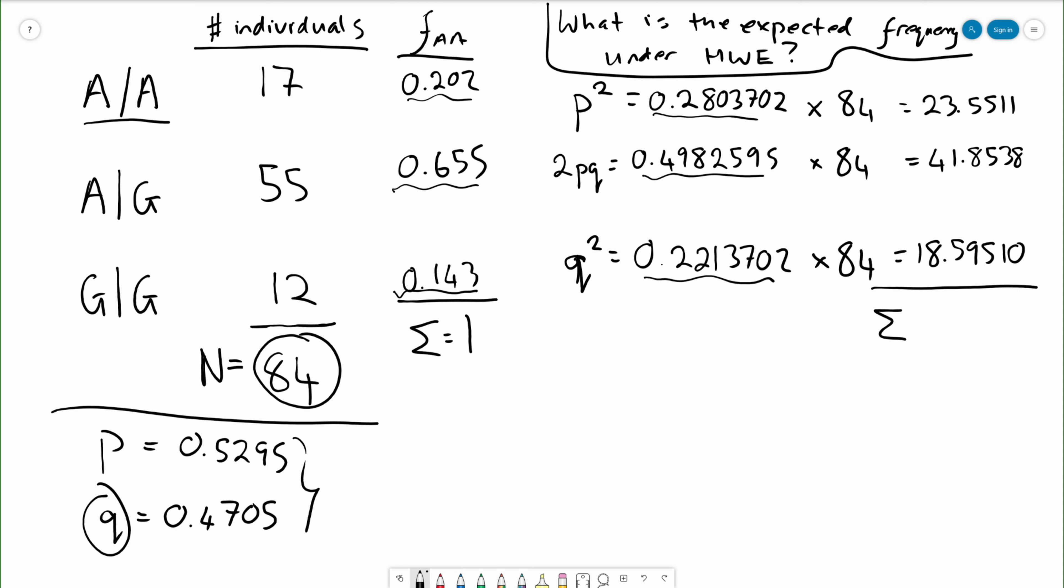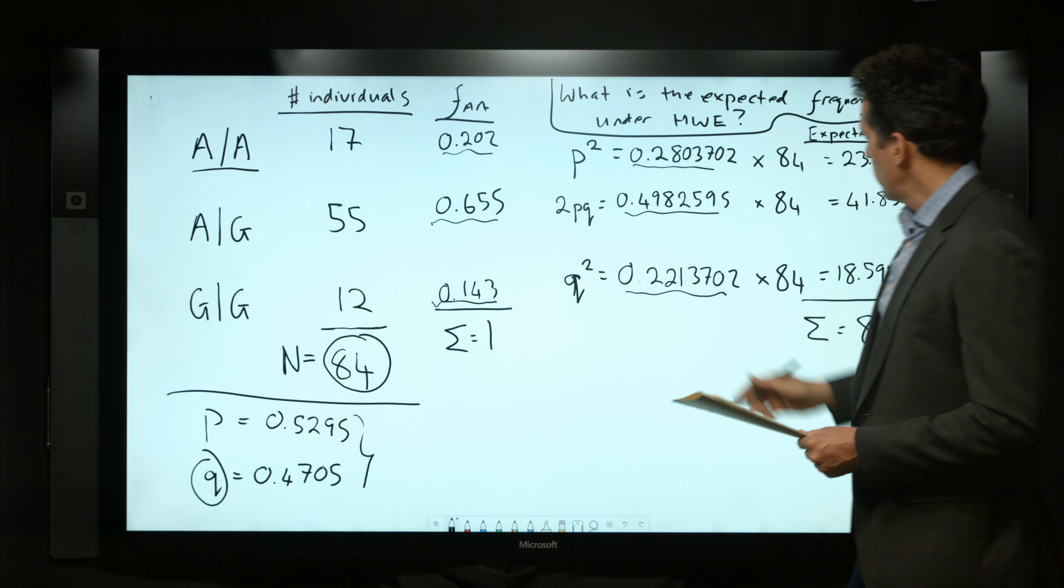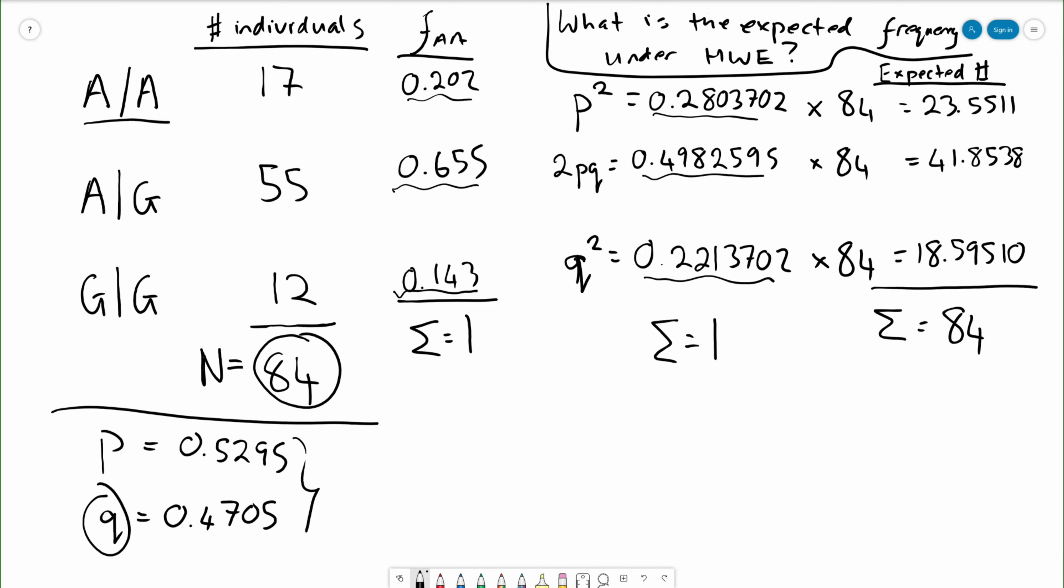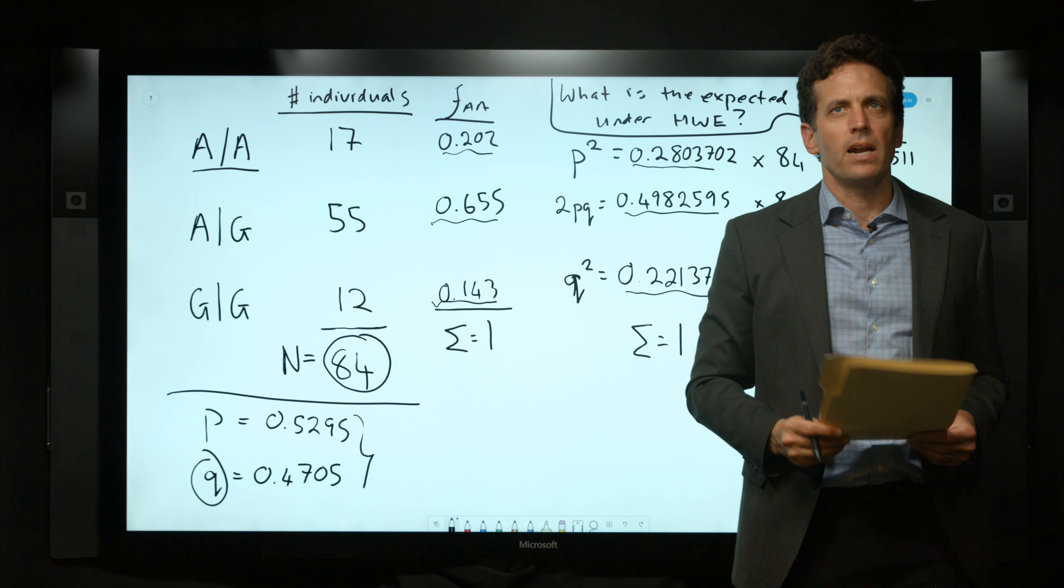These expected values sum to 84. We could do this check as well and make sure that these genotype frequencies add up to one. So now we have a scenario in which we have the expected number of individuals under Hardy-Weinberg equilibrium and the observed number of individuals.